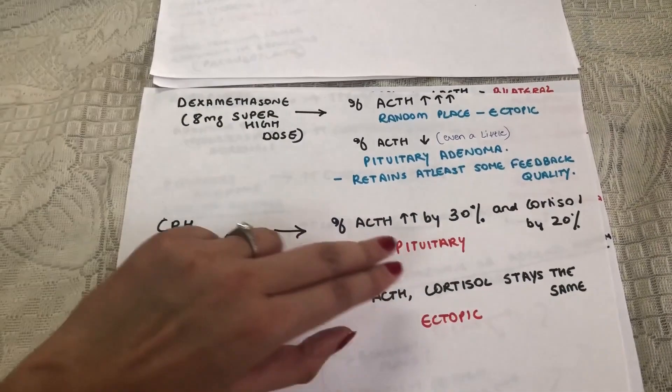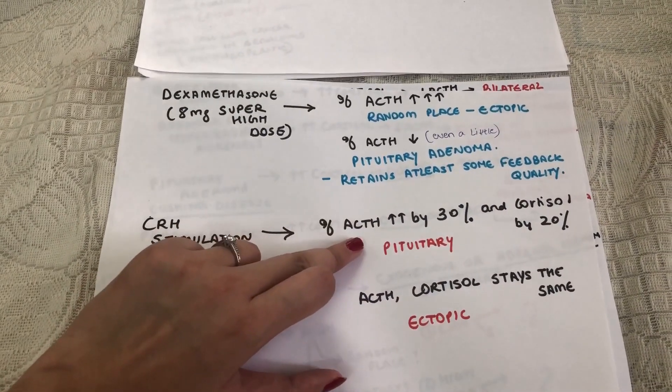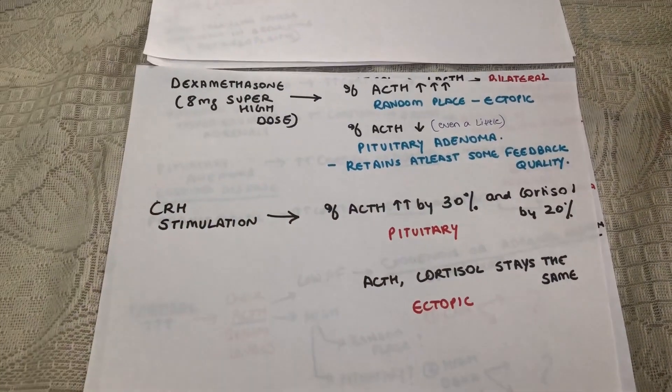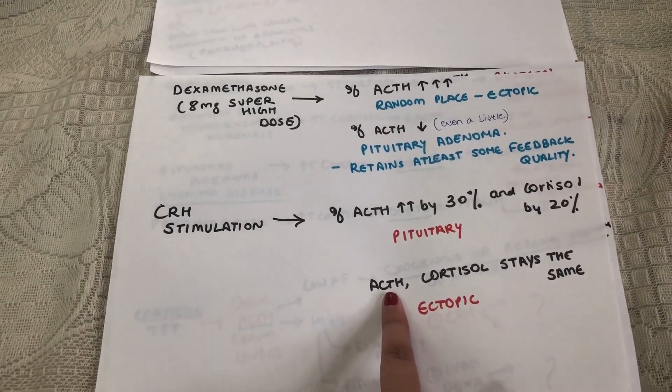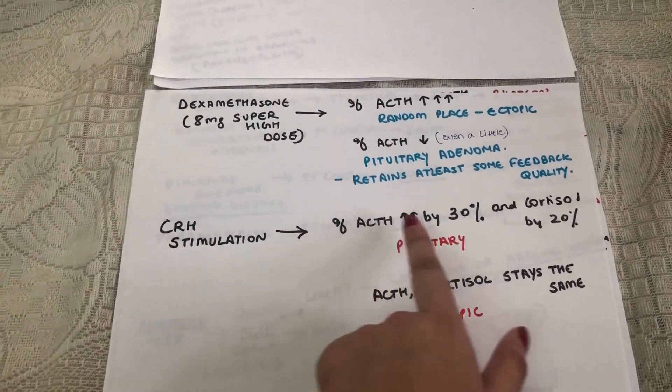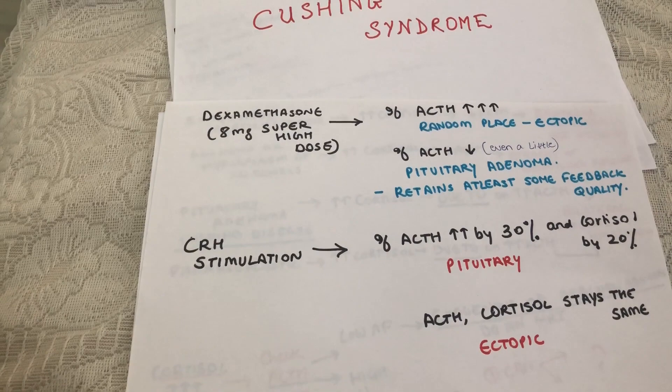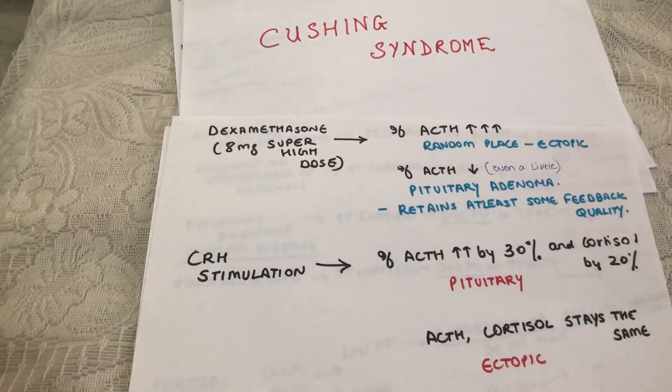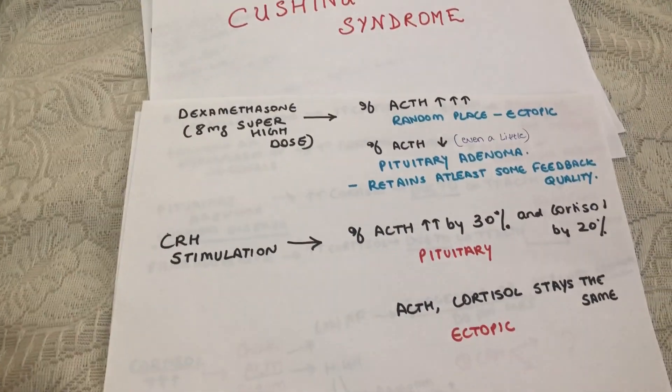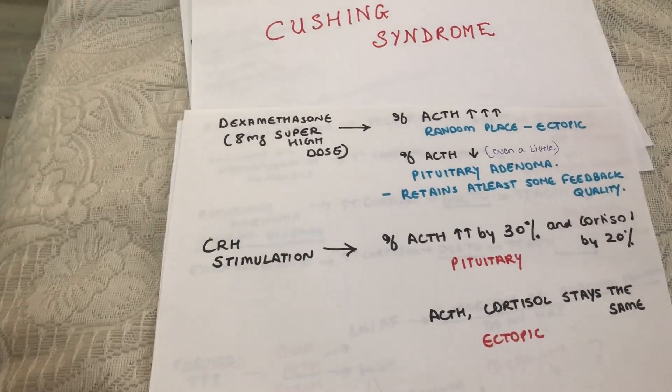That's how you can tell the difference between pituitary source and ectopic source. In one, the ACTH levels will not really increase and in the other one, they will shoot up. This is how you can differentiate between the different causes of Cushing syndrome. I really hope this was useful. Thank you so much for watching.